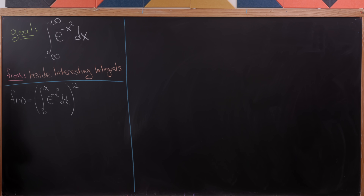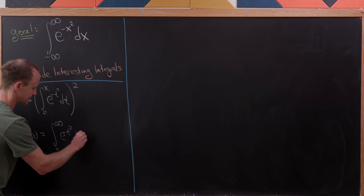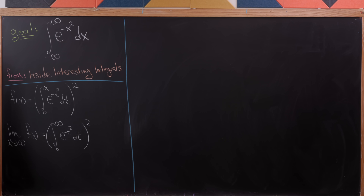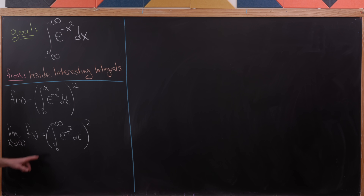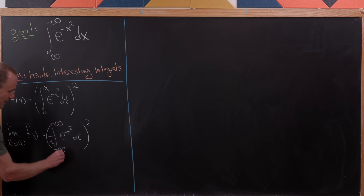Let's observe that the limit as x goes to infinity of f of x is equal to the integral from 0 to infinity of e to the minus t squared dt, quantity squared. Our target integral runs from minus infinity to infinity, whereas here we have an integral from 0 to infinity. But since this is an even function, the integral from minus infinity to infinity is exactly twice the integral from 0 to infinity.